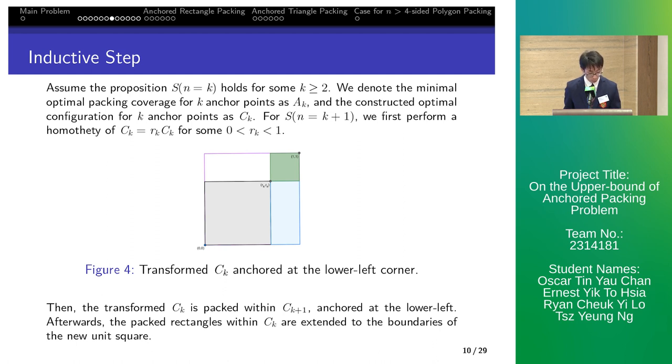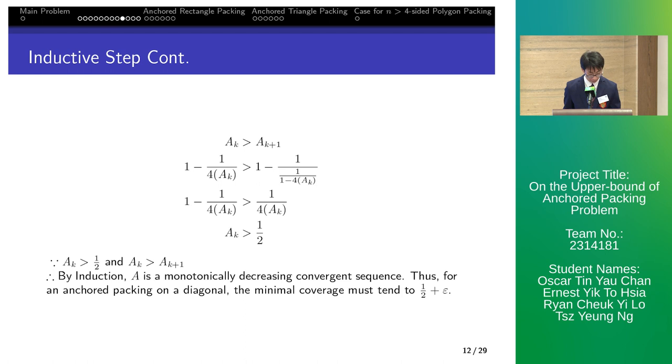To find the minimal optimal coverage, we find the first derivative of 8k plus 1 by RK. After differentiating, we get 8k RK equals 1 half, and we put it into the recurrence relation. First 8k minus 8k plus 1 is greater than 0. By simplifying our results, we know area with k points is larger than 1 half and larger than k plus 1 points. Therefore, 8 is monotonically decreasing convergence. When k tends to infinity, the coverage tends to 1 half plus epsilon.